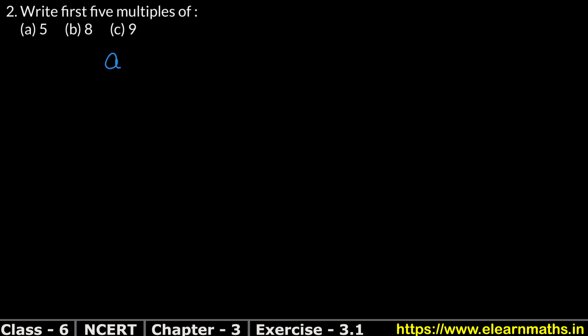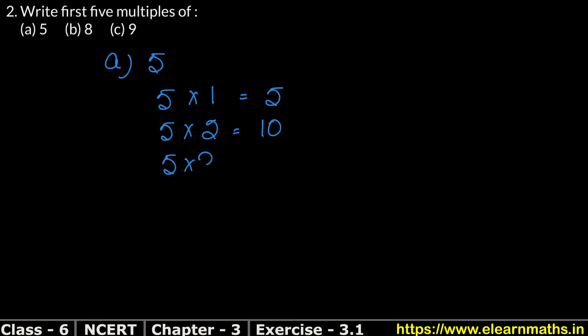Part A is 5. How do we make the first 5 multiples of 5? We multiply 5 first with 1 — 5 ones are 5. Then we multiply 5 by 2, that gives 10. Then we multiply 5 by 3, that gives 15. 5 by 4 gives 20. And 5 by 5 gives 25.